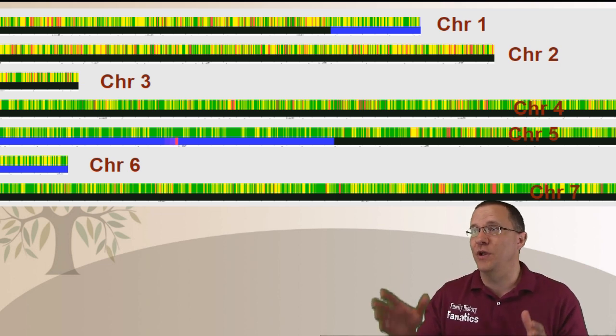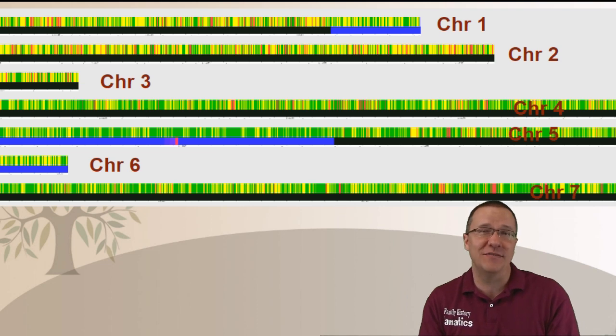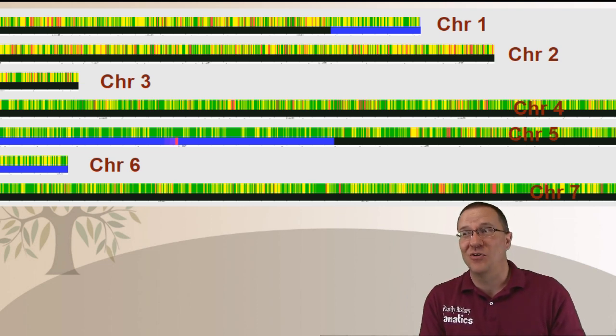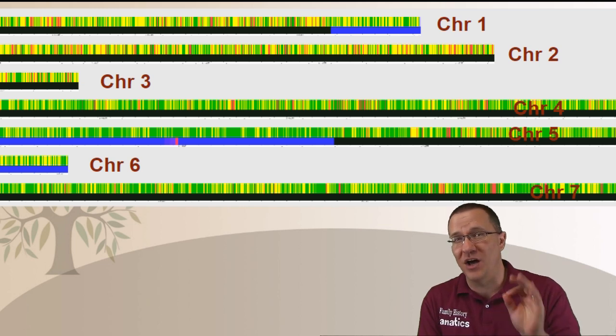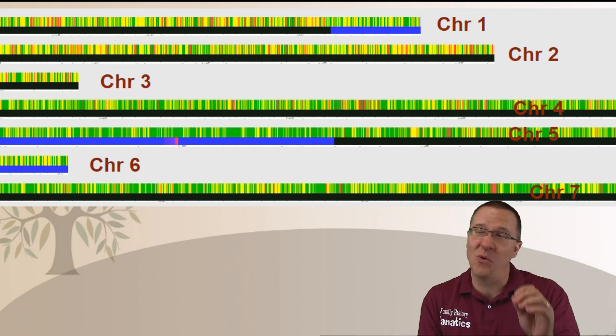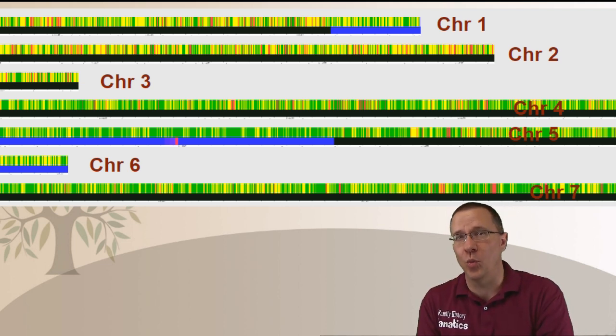So you can see on this one I have chromosome one two three four five six and seven. Now chromosome number one is showing that it's shorter than chromosome number two. But really all that means is there is just fewer SNPs tested on chromosome number one than on chromosome number two. You can also see that chromosome number four five and seven are even longer than chromosome number two or one.